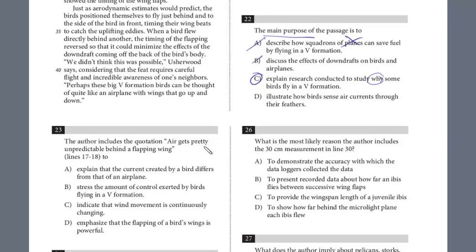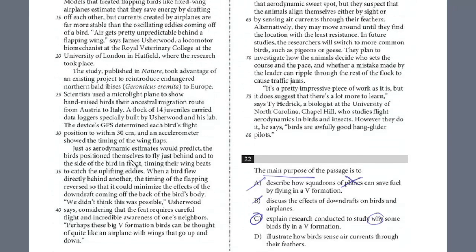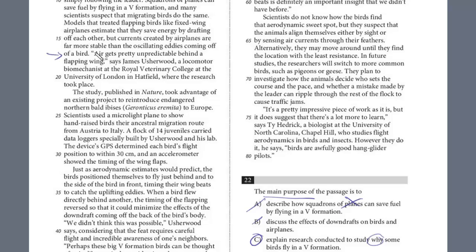Question 23: the author includes the quotation, air gets pretty unpredictable behind a flapping wing, to do what? This is what I call a function question. Let's go back to lines 17 and 18. Models that treated flapping birds like fixed-wing airplanes estimate they save energy by drafting off each other. But the currents created by airplanes are far more stable than the oscillating eddies coming off a bird. Air gets pretty unpredictable behind a flapping wing. This first sentence states that it's similar to what airplanes do, but airplanes are far more stable than these oscillating eddies - air currents moving back and forth. So it's really to show that even though it's similar to an airplane, it's not the same because airplanes are much more stable, but with the birds, it's unpredictable.